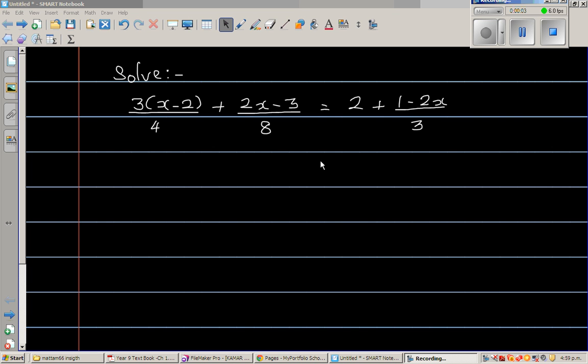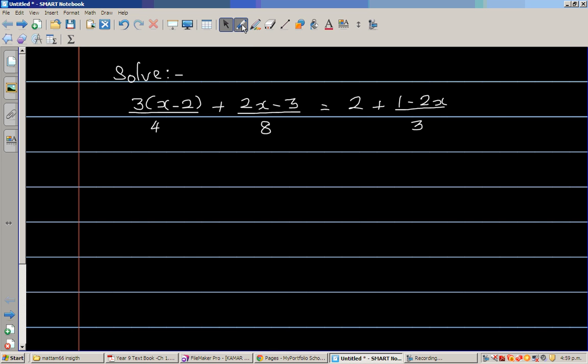Let us look at this complex linear equation. First we'll do it algebraically and I'll then show you how to check it on a graphic calculator. So the equation is 3 times x minus 2 over 4 plus 2x minus 3 over 8 equals 2 plus 1 minus 2x over 3.